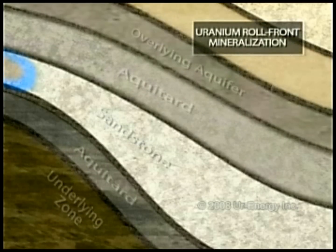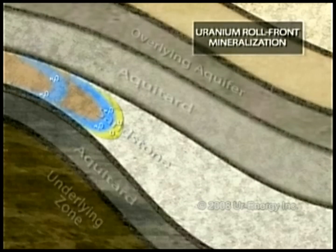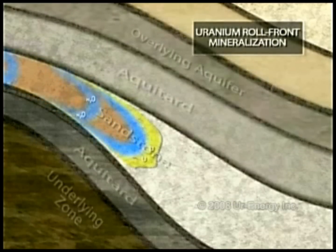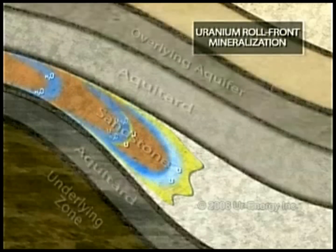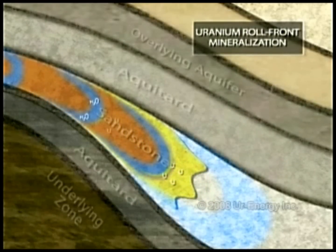Surface water flows into a porous and permeable sandstone aquifer. This groundwater contains dissolved oxygen and low concentrations of naturally occurring uranium, which is kept in solution by the oxygen. As the groundwater migrates, the oxygen reacts with minerals and organic matter in the sandstone. Without oxygen, the uranium converts from an oxidized to a reduced chemical state and is no longer soluble in water. This oxidization and reduction process in the sandstone creates a roll-front that moves slowly over millions of years, while accumulating uranium all through the action of naturally flowing groundwater.